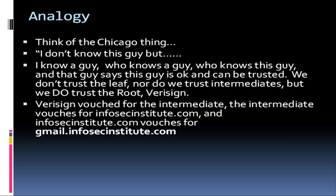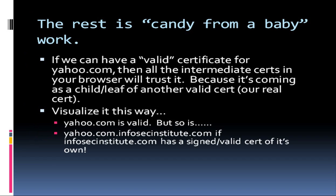With that being said, we can now append gmail.com or something like that to Infosec Institute. The rest is kind of like taking candy from a baby, and here's why. If we can have a valid certificate for yahoo.com, then all the intermediate certs in your browser will trust it because it's coming as a child or leaf of another valid cert, which is our real cert. Visualize it this way: yahoo.com is valid, but so is yahoo.com.infosecinstitute.com if infosecinstitute.com has a signed and valid cert of its own.